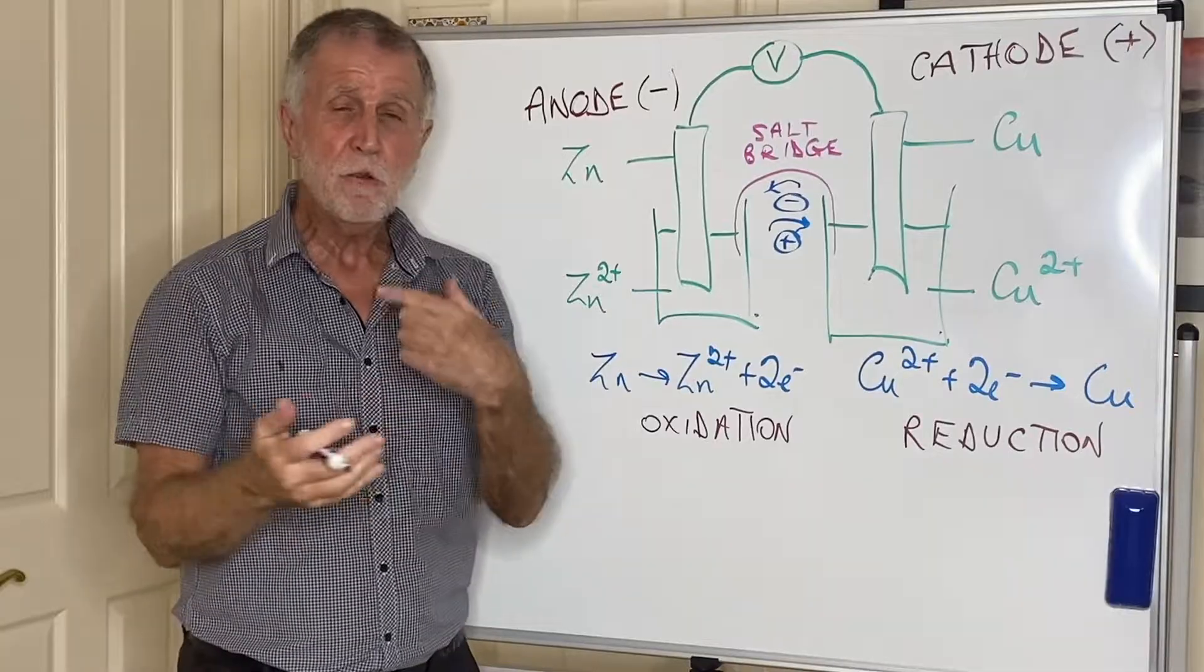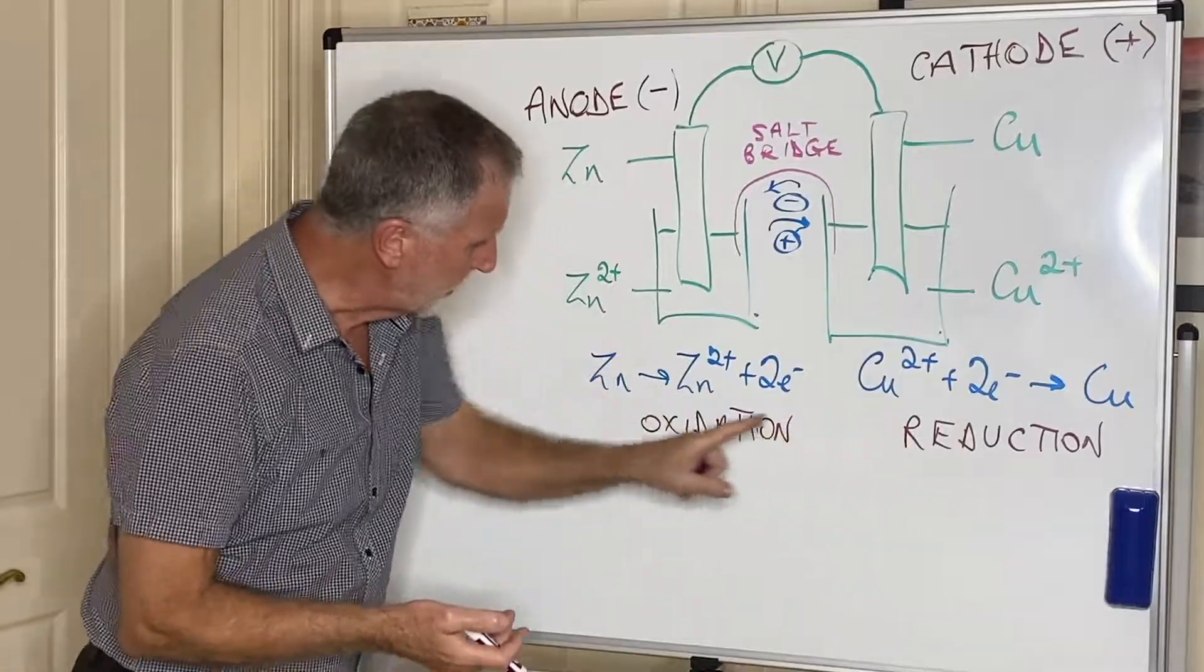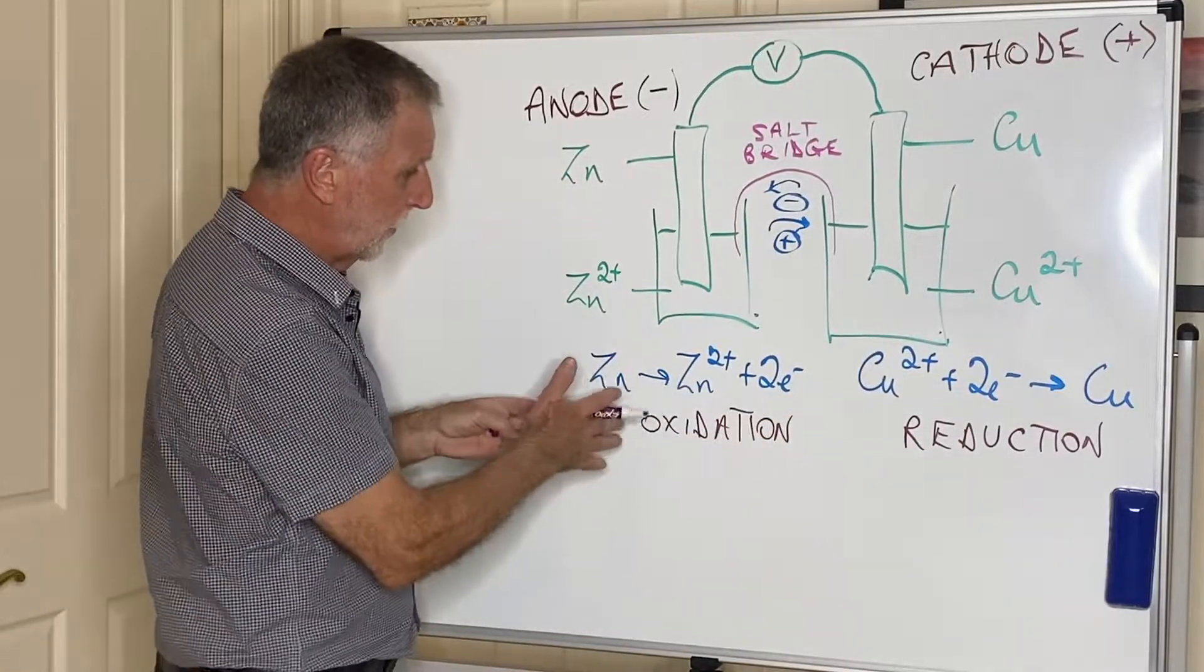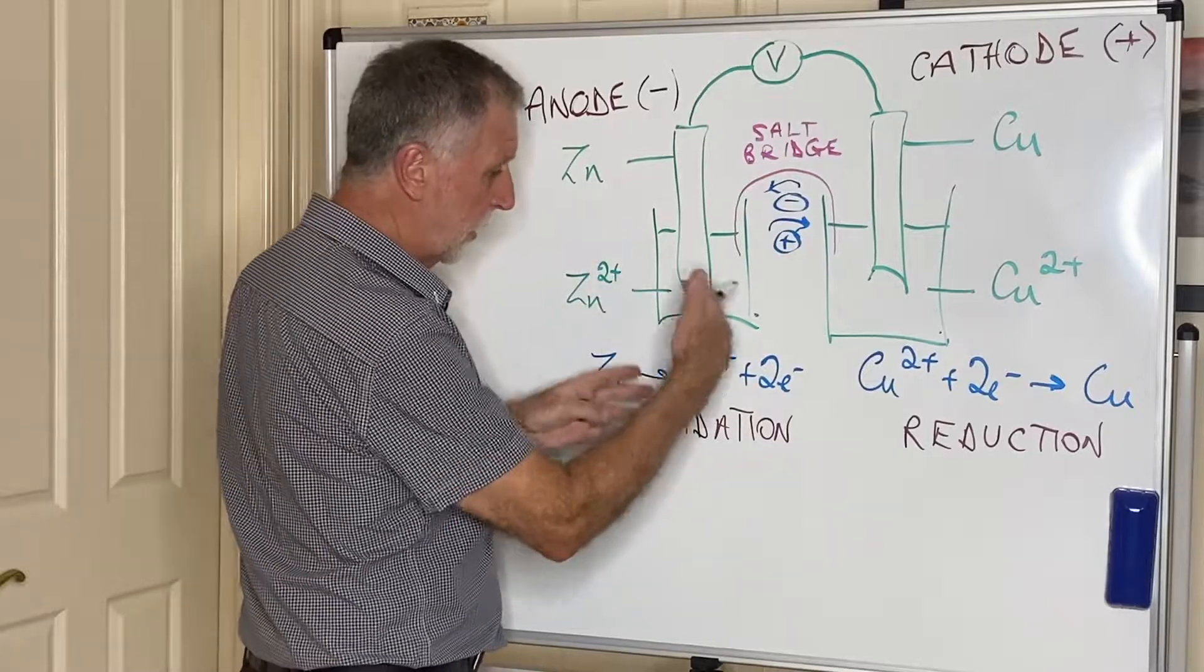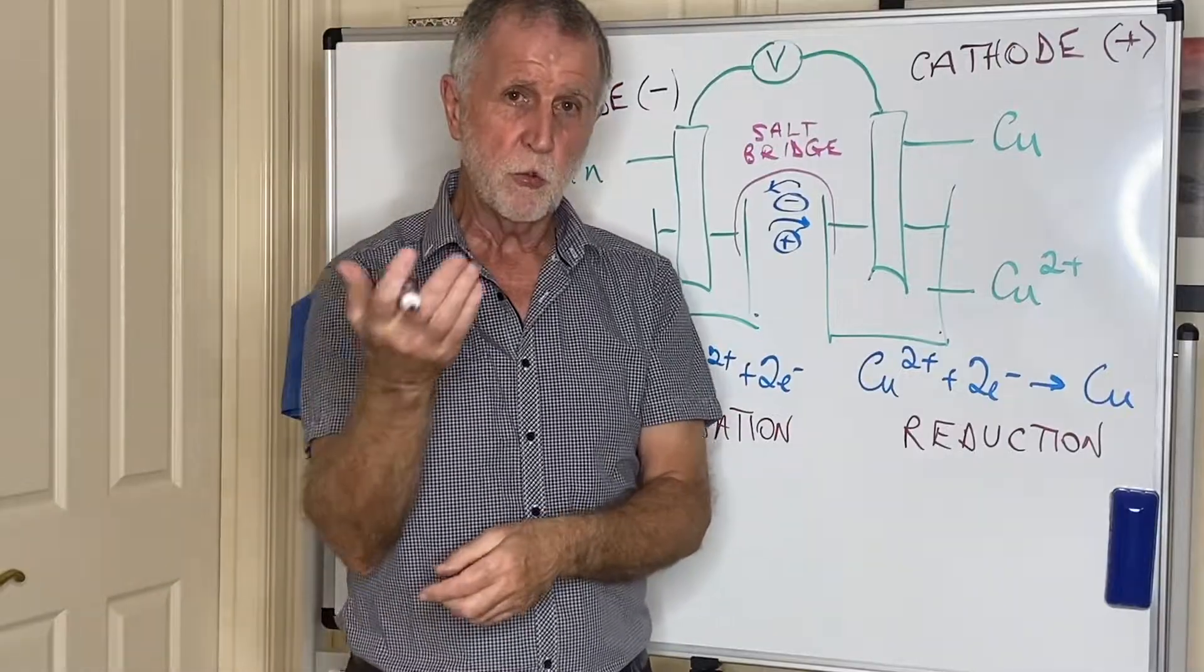And in every battery there will be two reactions taking place—there'll be a redox reaction taking place as one of the chemicals gets oxidized and the other chemical gets reduced, and the oxidation-reduction reaction generates voltage, which is effectively electrical energy.